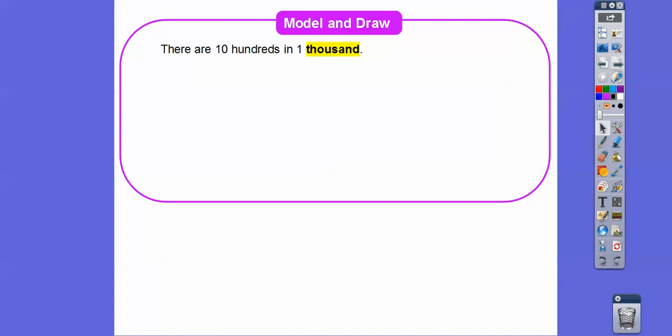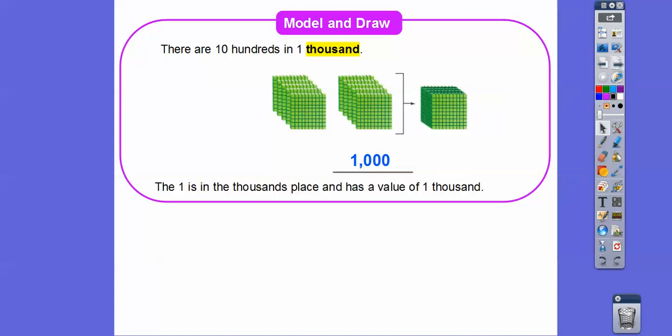So there are 10 hundreds in 1,000. So here's 100 right there. So let's do 10 of them. Here's 10 of them right there. That gives us 1,000. If we have 10 hundreds, that gives us 1,000. And so you see a big cube that looks like that. And then that big cube represents 1,000. So the one in the thousands place has a value of 1,000. A one with three zeros. Thousand has three zeros.